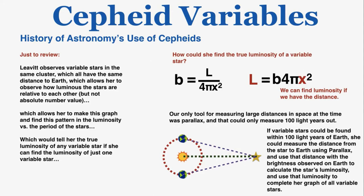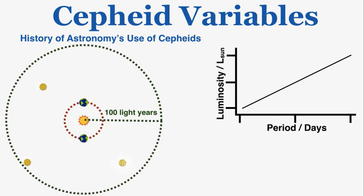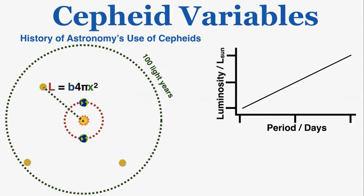If she could find the true luminosity of any variable star, she could find the luminosity of every variable star. Our only tool for measuring large distances at the time was parallax, good to 100 light-years. So if variable stars could be found within 100 light-years of Earth, she could measure their distance with parallax, use that distance with observed brightness to calculate luminosity, and use that luminosity to complete her graph. After she published her paper, astronomers did observe variable stars within 100 light-years, used parallax to measure their exact distance, calculated their luminosity from brightness and distance, and recorded their period — placing each star on her graph.